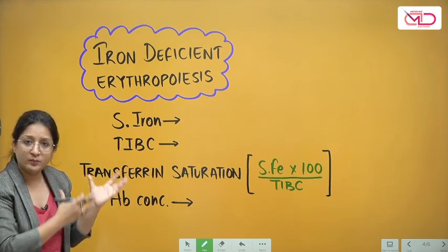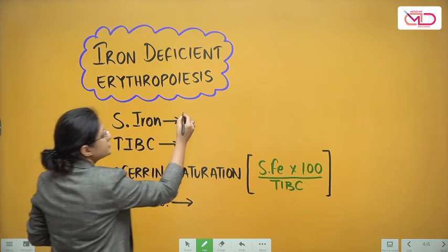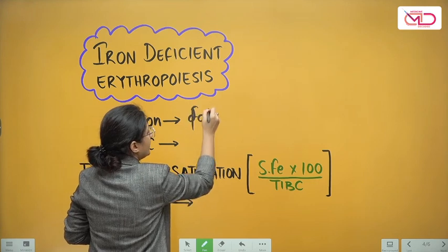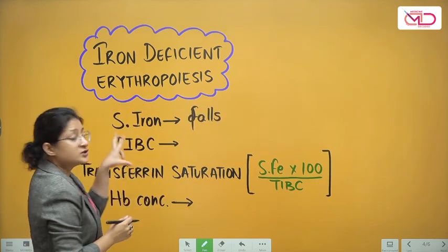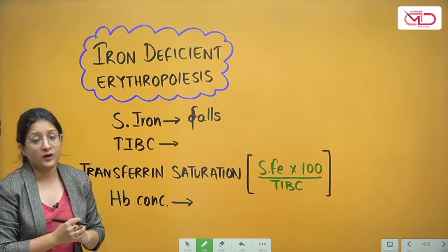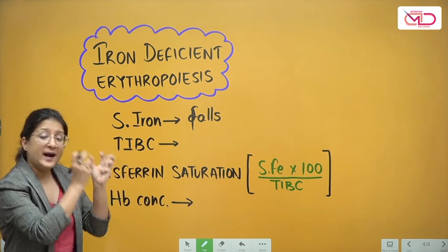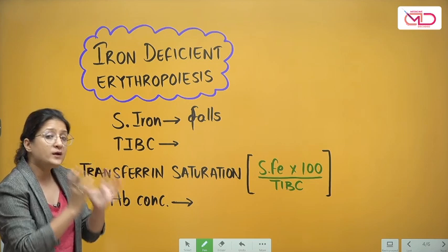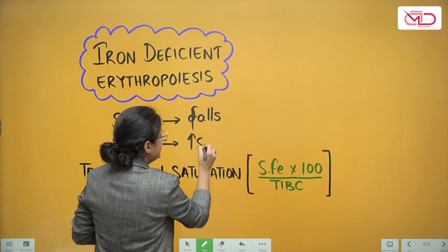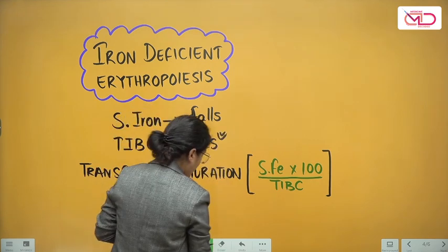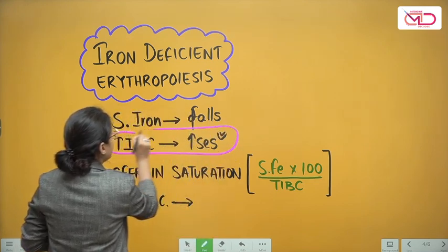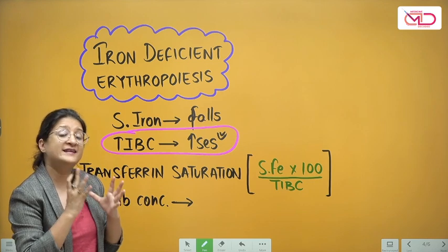At this stage, serum iron concentration starts to fall. The total iron binding capacity (TIBC) also increases — this is very important to note — because absorption is maxed out and whatever iron is being absorbed is binding to transferrin, so the total iron binding capacity increases in cases of iron deficiency.